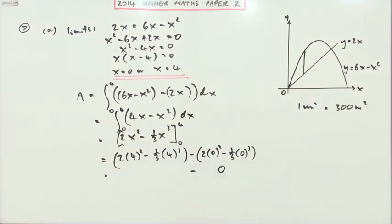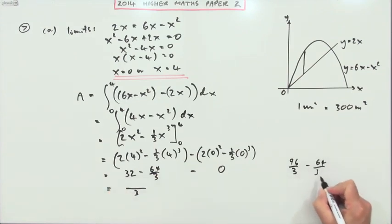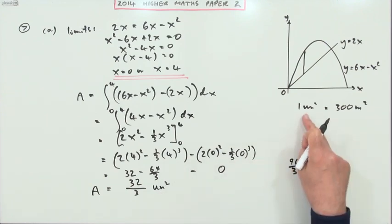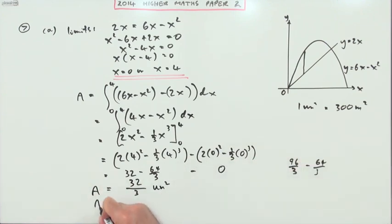What's this? Well, 4 squared is 16, so that's 32. 4 cubed is 64, so it's minus 64 upon 3. Turn it all into thirds: that would be 96 upon 3 minus the 64 upon 3. Take that away, leaves 32. So the area is 32 upon 3 units squared. But each unit was 300 square meters, so the area is 32 upon 3 times 300 square meters. That knocks that down to 100, so the final answer will be 3200 square meters.